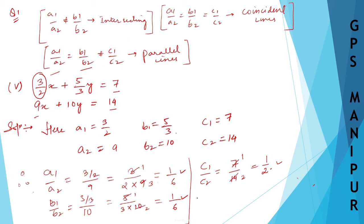Since A1/A2 is equal to B1/B2 and doesn't equal C1/C2, they are parallel lines. The lines are parallel.